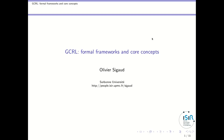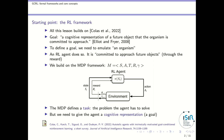Welcome to the second class about goal-conditioned reinforcement learning. In this lesson we will see formal frameworks — there are several possible formal frameworks to represent goal-conditioned reinforcement learning — and also some core concepts. This lesson builds a lot on a paper from Cédric Collard, and we encourage you to read it if you are really interested in goal-conditioned RL. Let's start again with the definition of a goal from Eliott and Freer, which states that a goal is a cognitive representation of a future object that the organism is committed to approach.